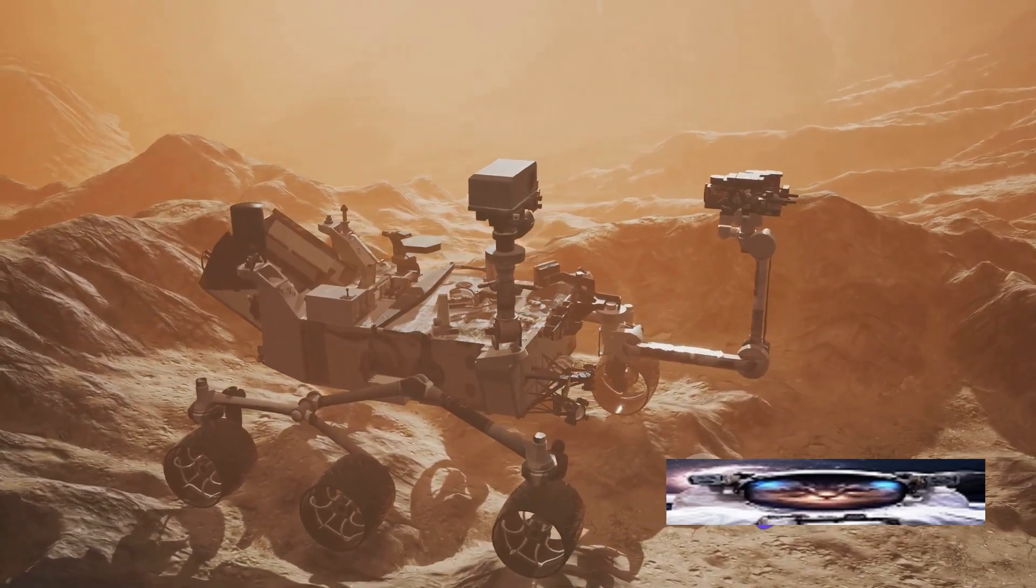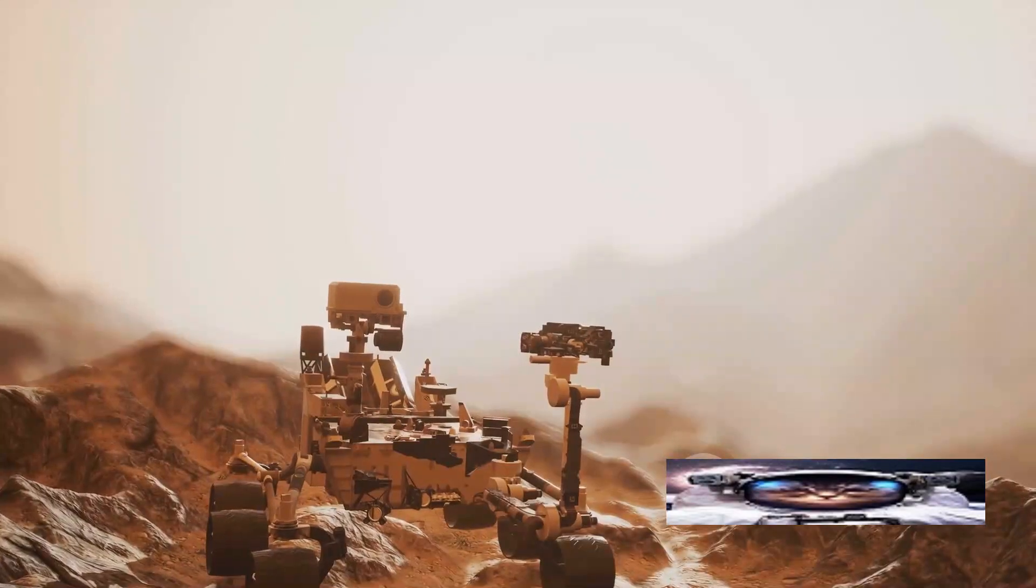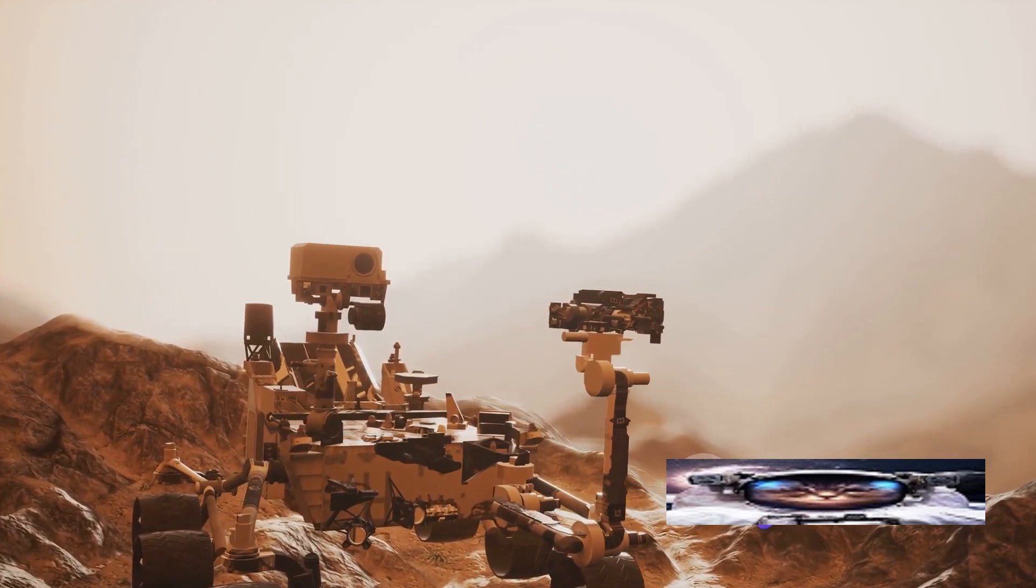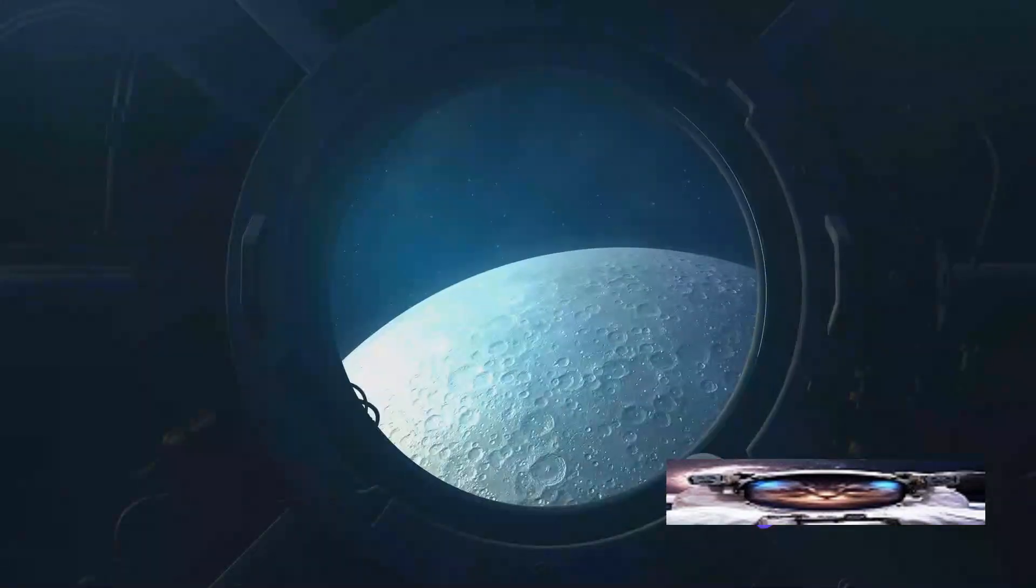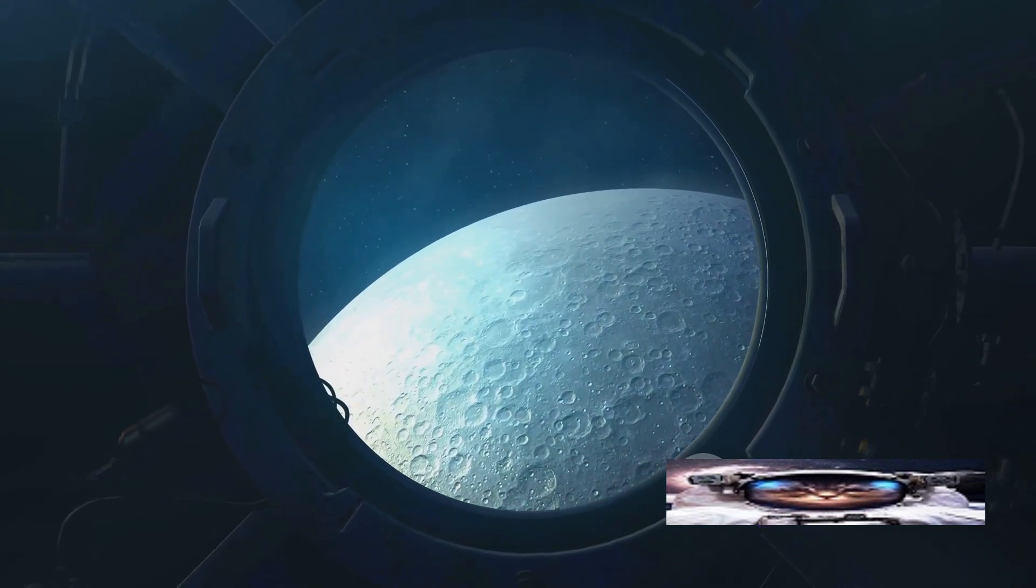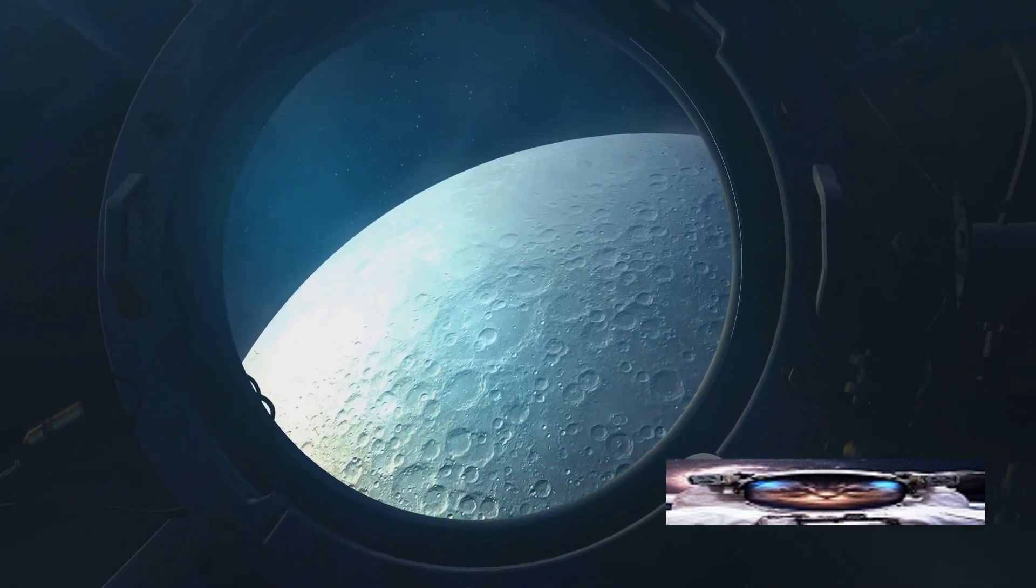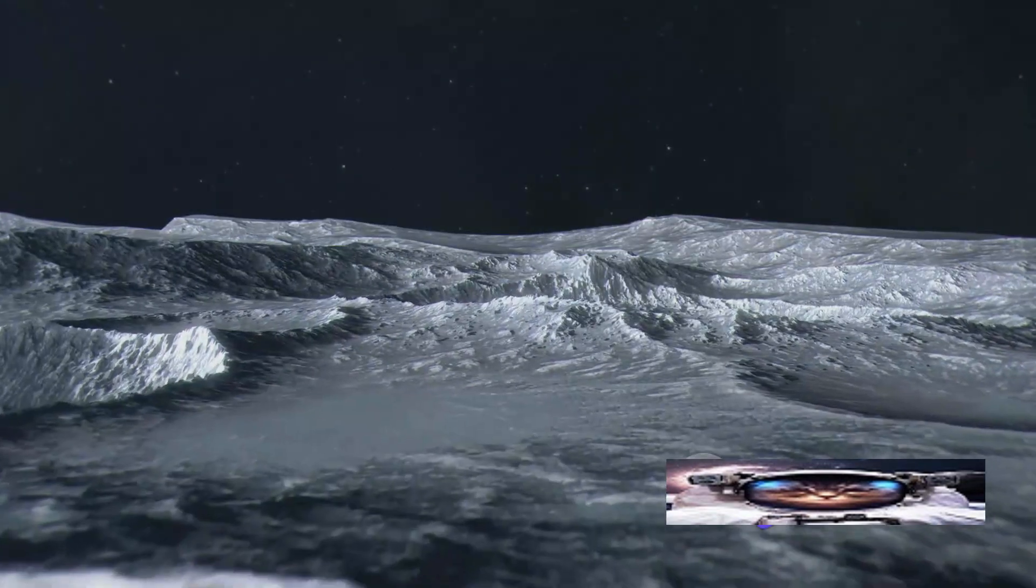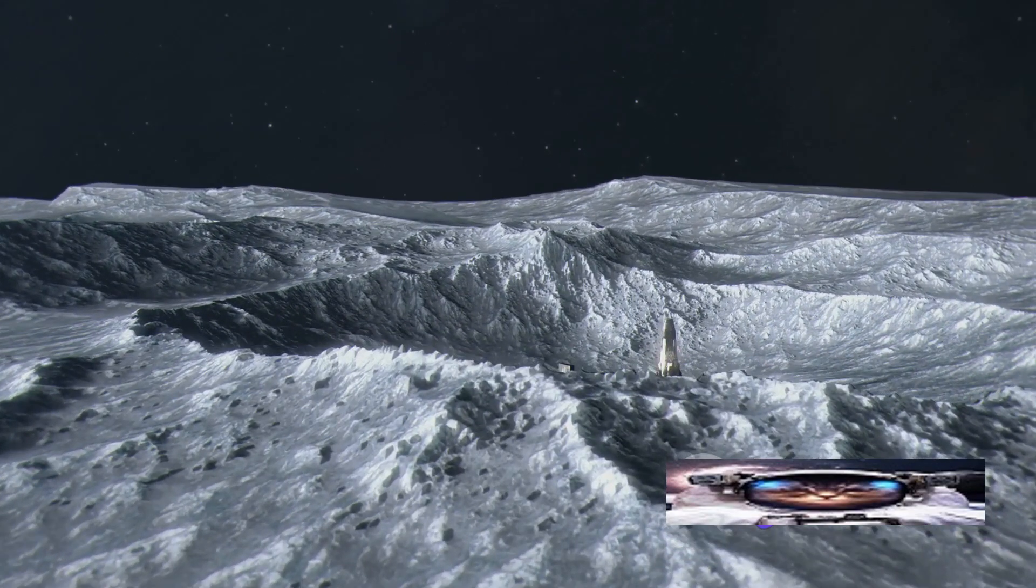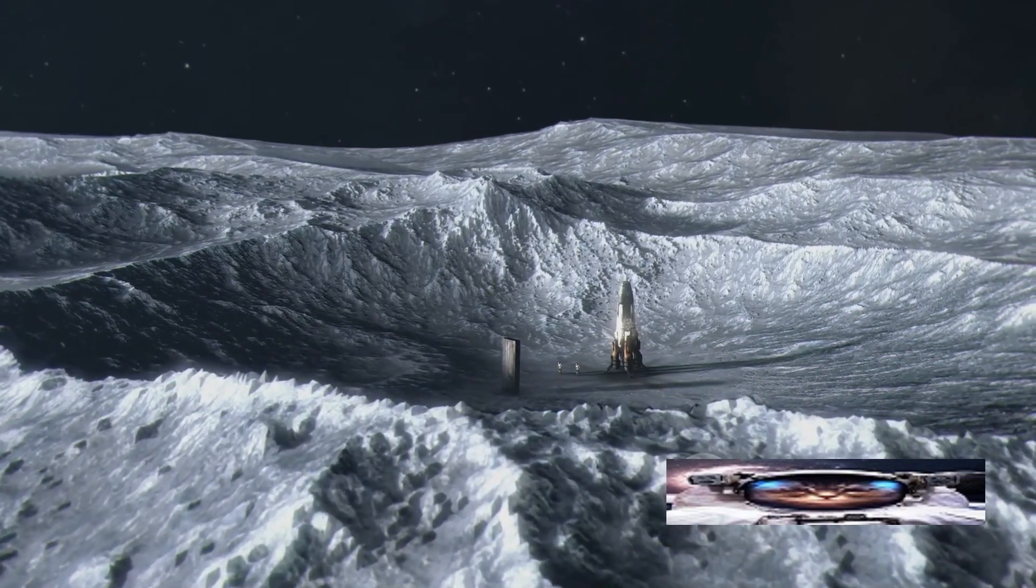Mars, with its similarities to Earth, continues to be a prime focus. The red planet has already been subject to numerous rovers and orbiters, with future missions planning to return samples to Earth for more detailed study. Yet, our search isn't limited to Mars. The icy moons of Jupiter and Saturn, such as Europa and Enceladus, are also considered potential habitats for life. They are believed to harbor vast subsurface oceans, which could possibly sustain life. The planned missions to these intriguing moons could provide us with invaluable insights into the existence of life beyond Earth.